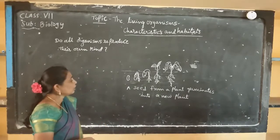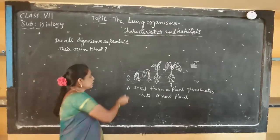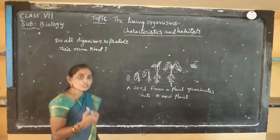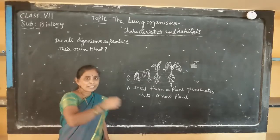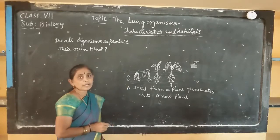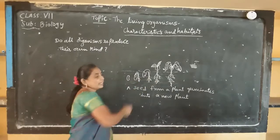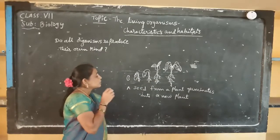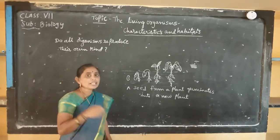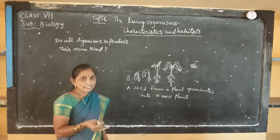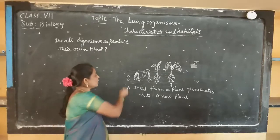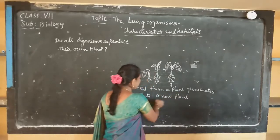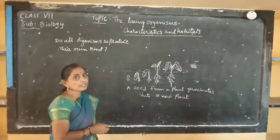If you take a small seed, like a bean seed — the seed can be present in the shop for many days. Once we bring the seed and plant it in the soil, it germinates and develops into a new plant. Once the seed is planted in soil, it utilizes water, minerals, and other additions. The seed germinates into a new plant. A seed from a plant germinates to become a new plant.